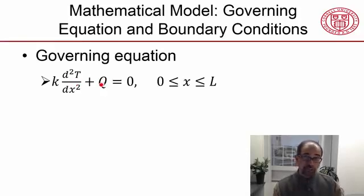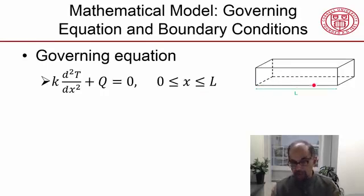And both these terms are written per unit volume and they have to add up to zero for energy conservation. And this equation is defined from x equal to zero to x equal to L. That's because our bar is of length L.